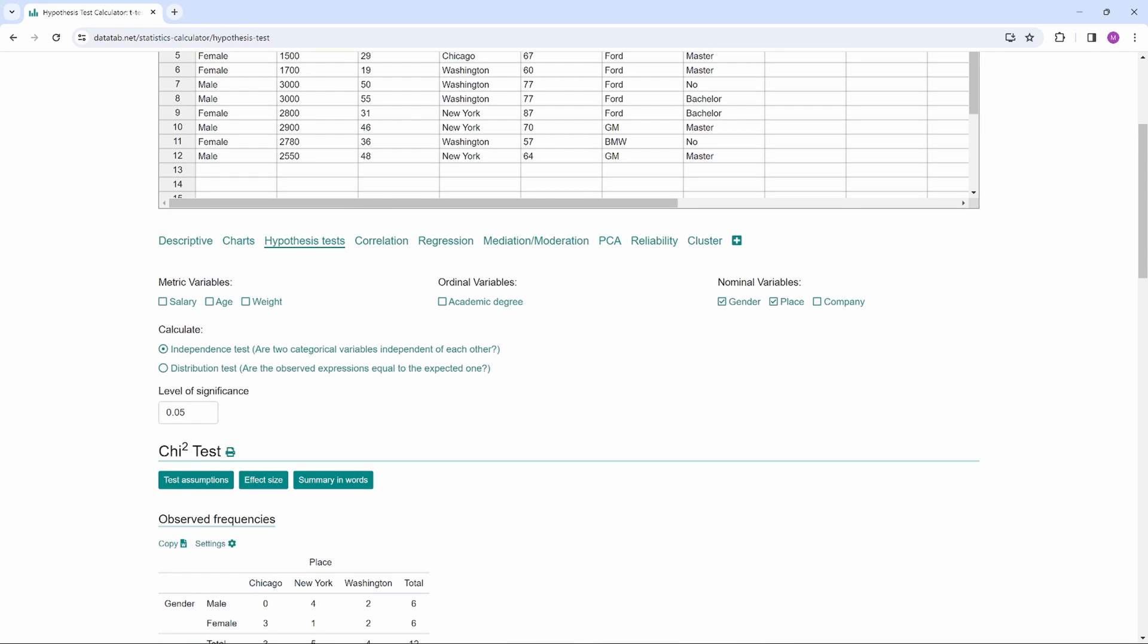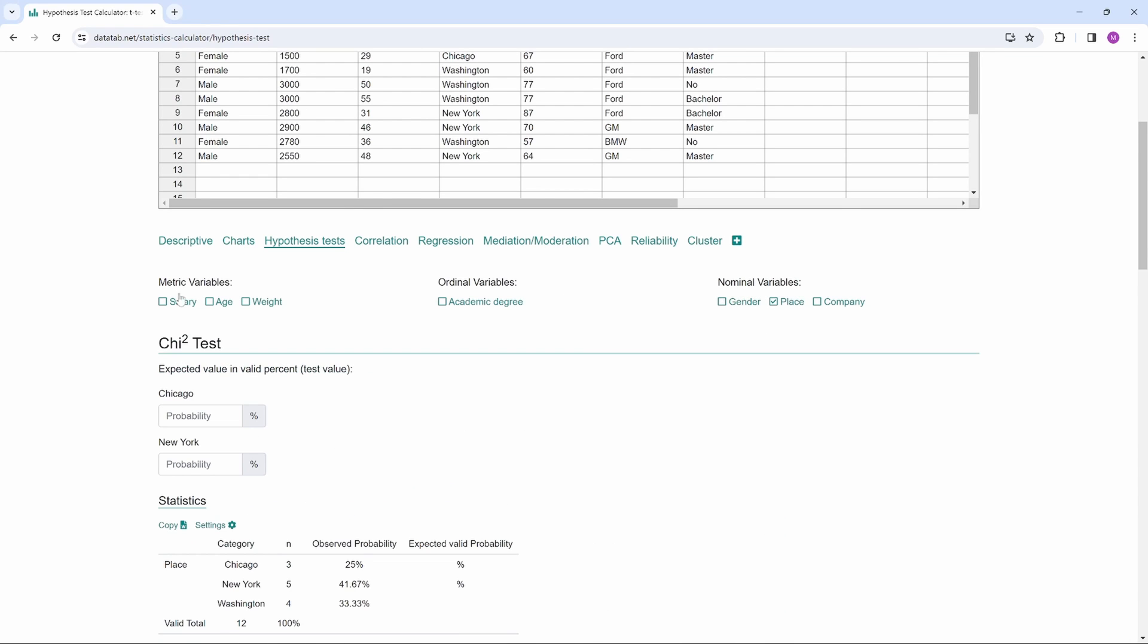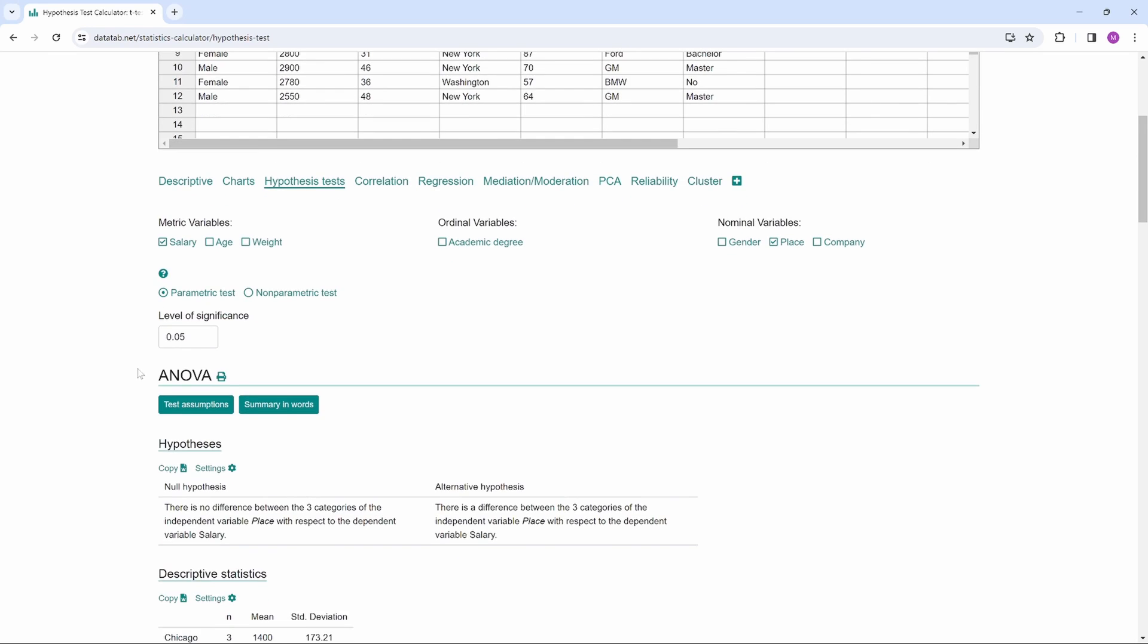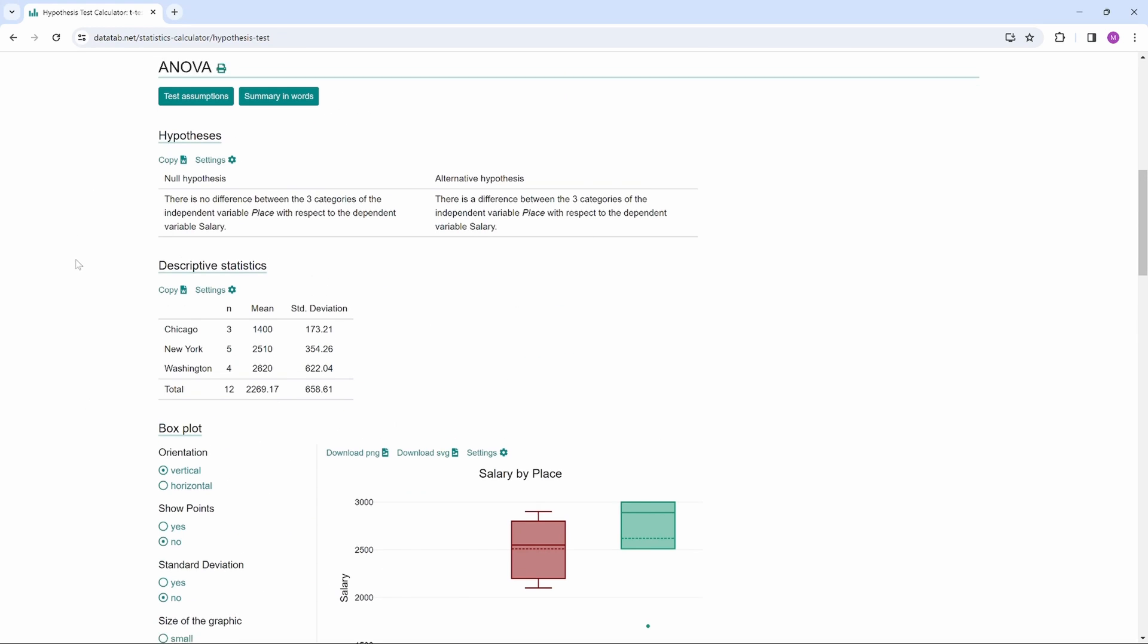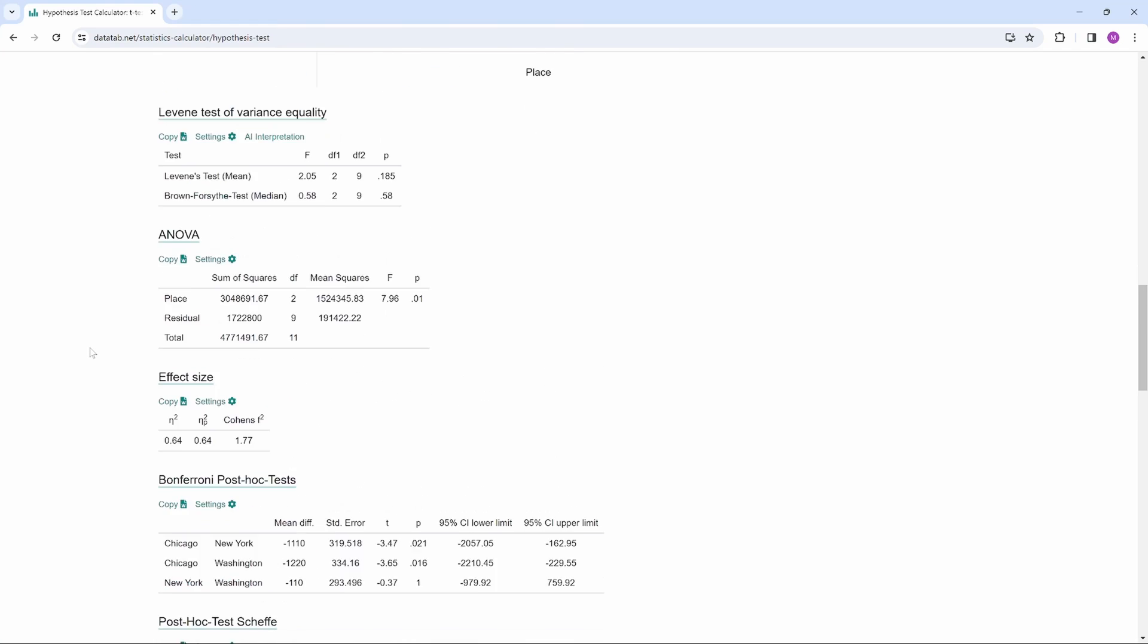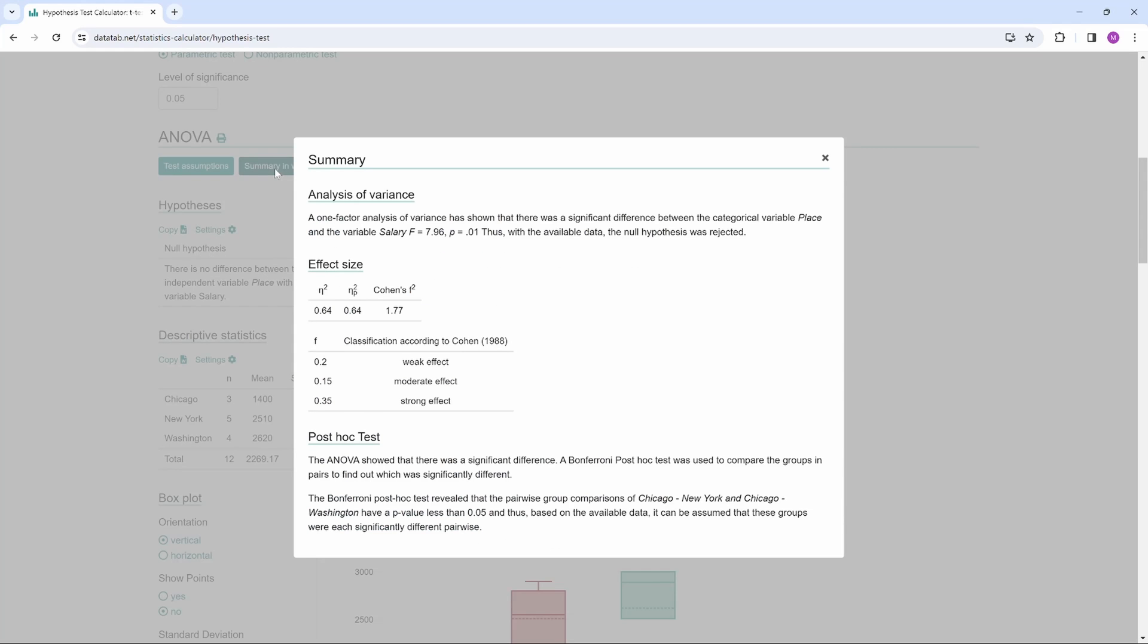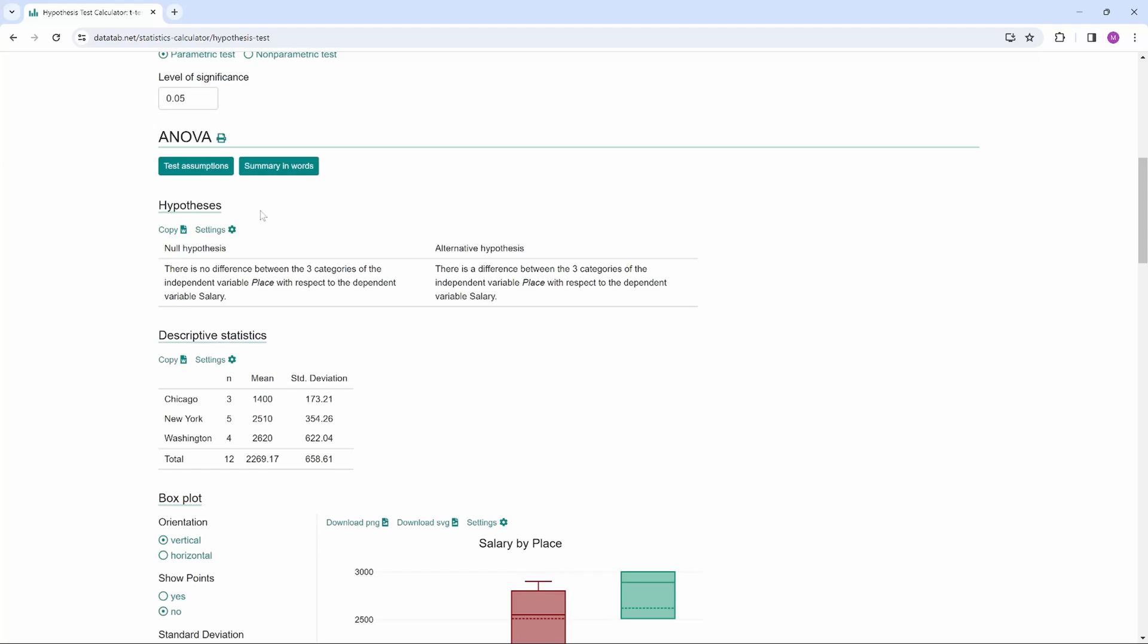For example, in this case, a chi-square test or, in that case, an analysis of variance. Then you will see the hypotheses and the results. If you're not sure how to interpret the results, click on summary in words.